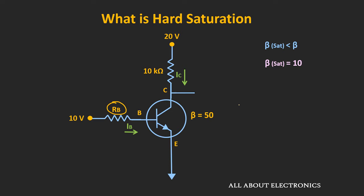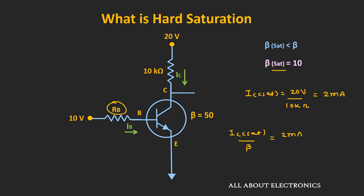To operate the BJT in the hard saturation, the value of β should be very low. It will ensure that even if there is a change in the external parameters, the transistor still operates in the saturation. To operate this transistor in hard saturation, let's calculate the value of the base resistor. For the given values of Vcc and Rc, the saturation current Ic(sat) is equal to 20V divided by 10kΩ, that is equal to 2mA. And to get the value of β equal to 10, the value of Ic(sat) divided by β means the base current Ib should be equal to 2mA divided by 10, that is equal to 200μA.